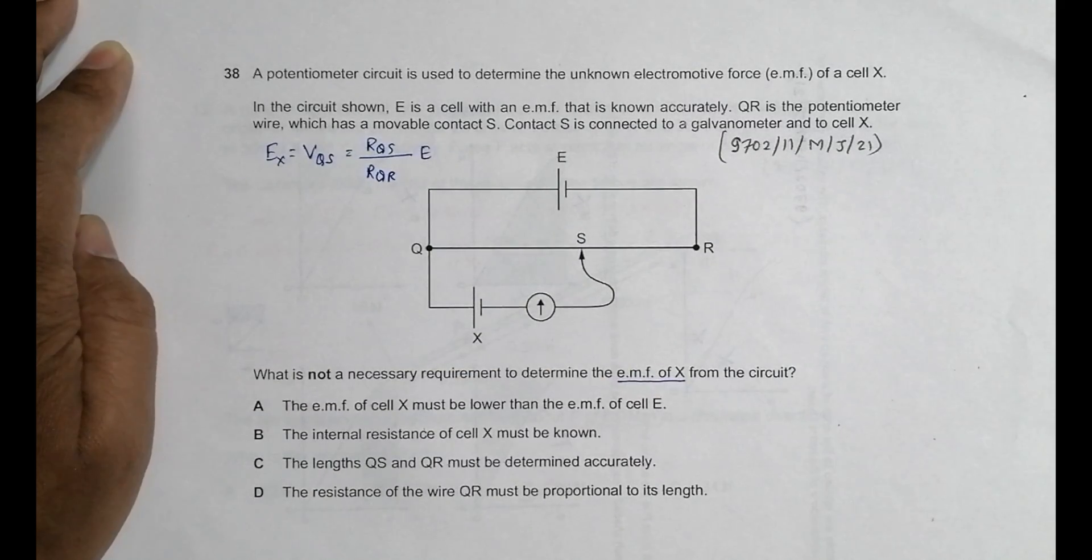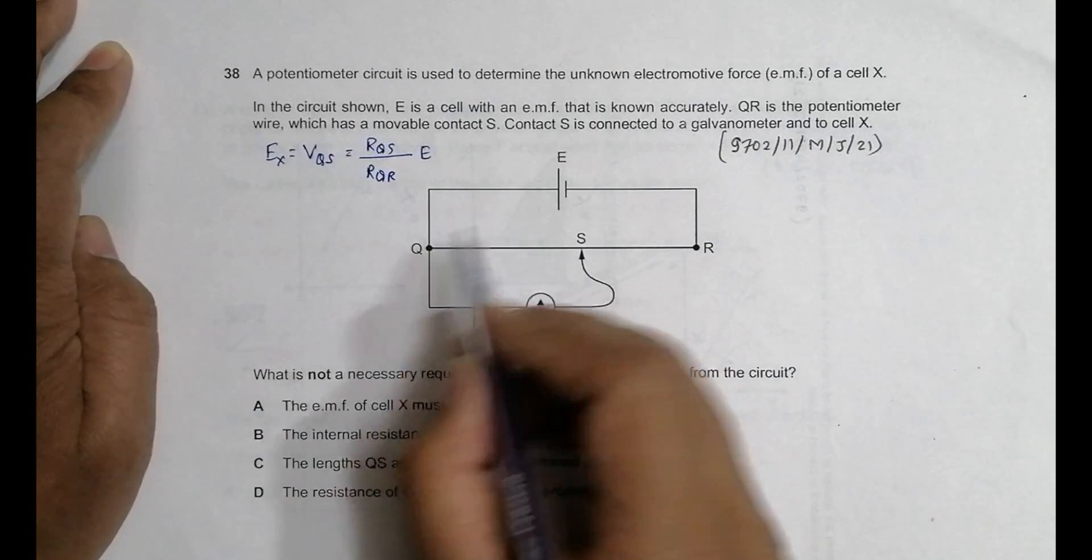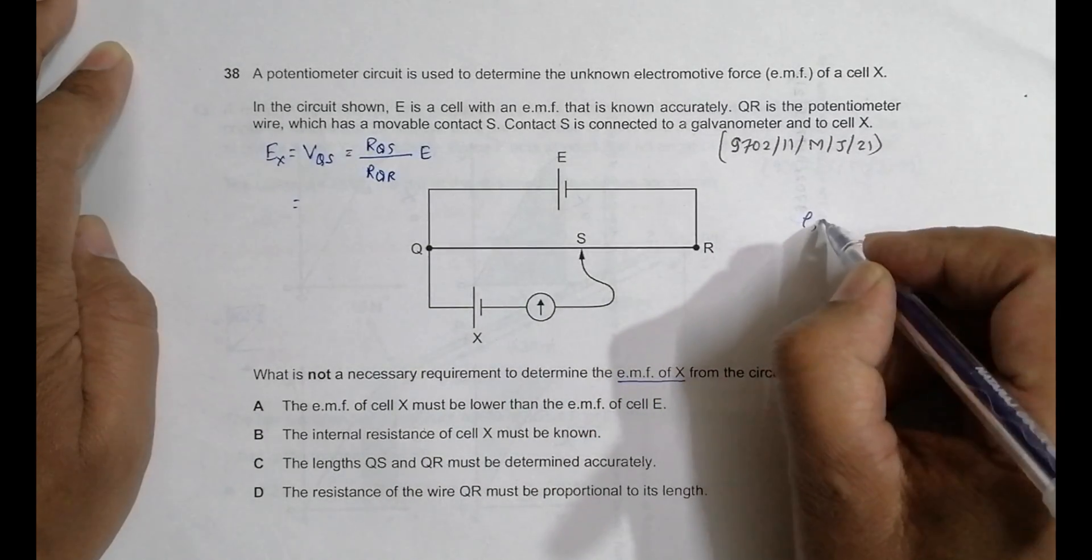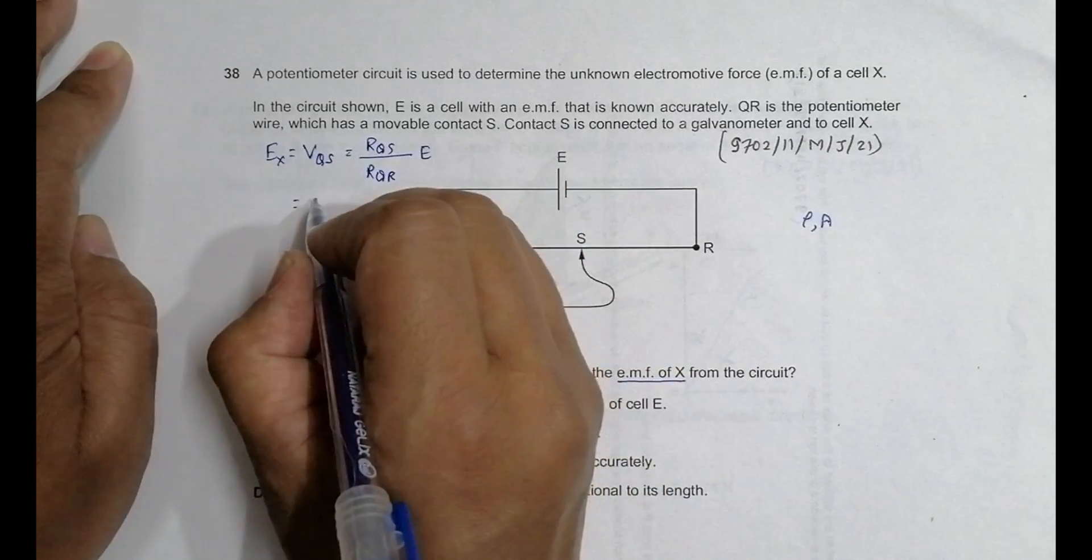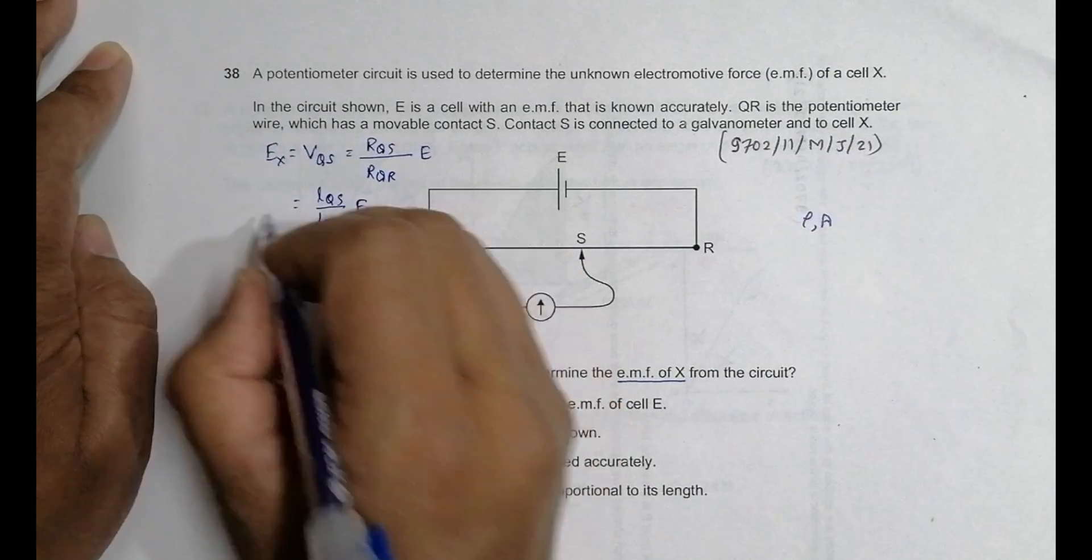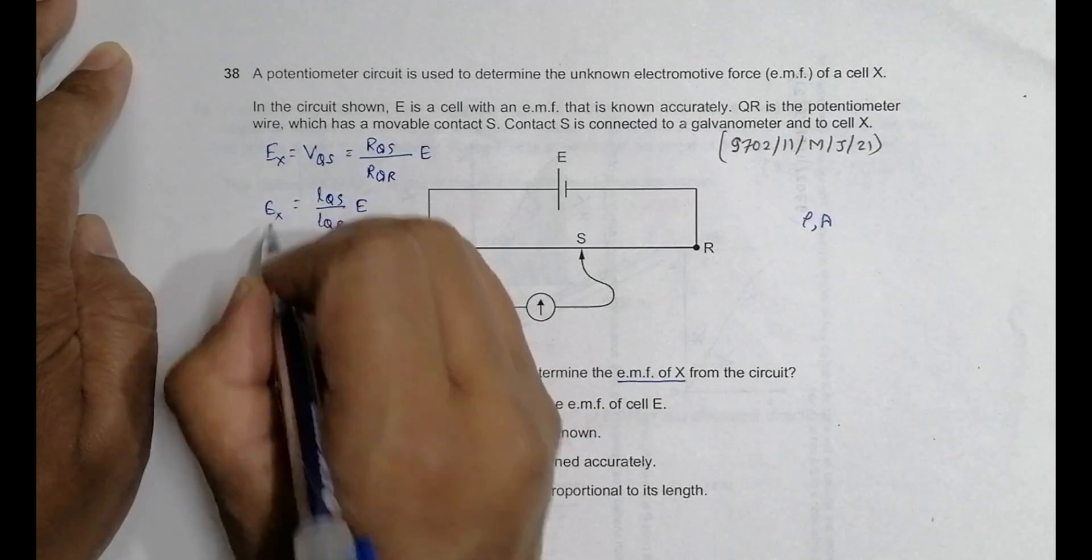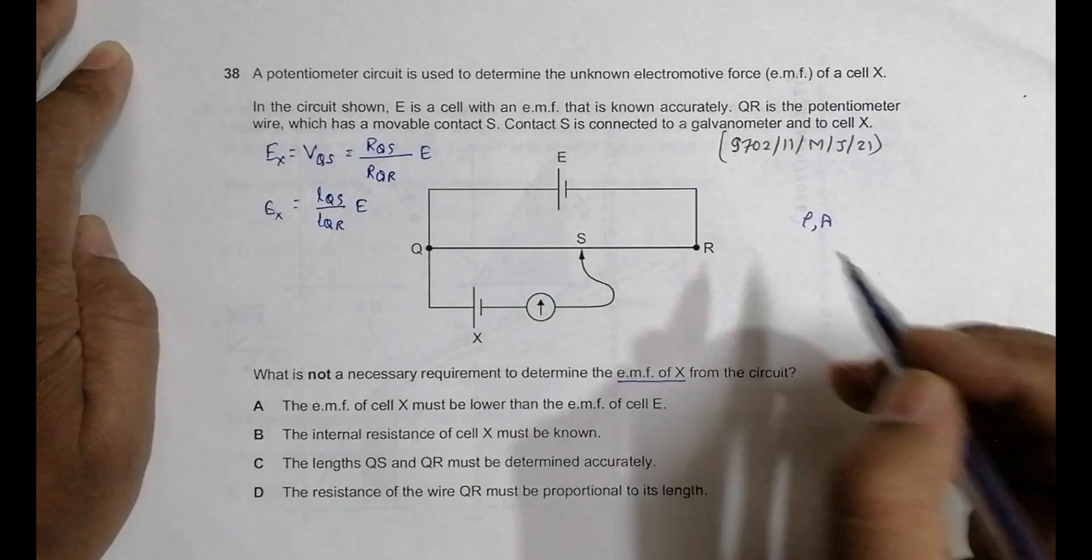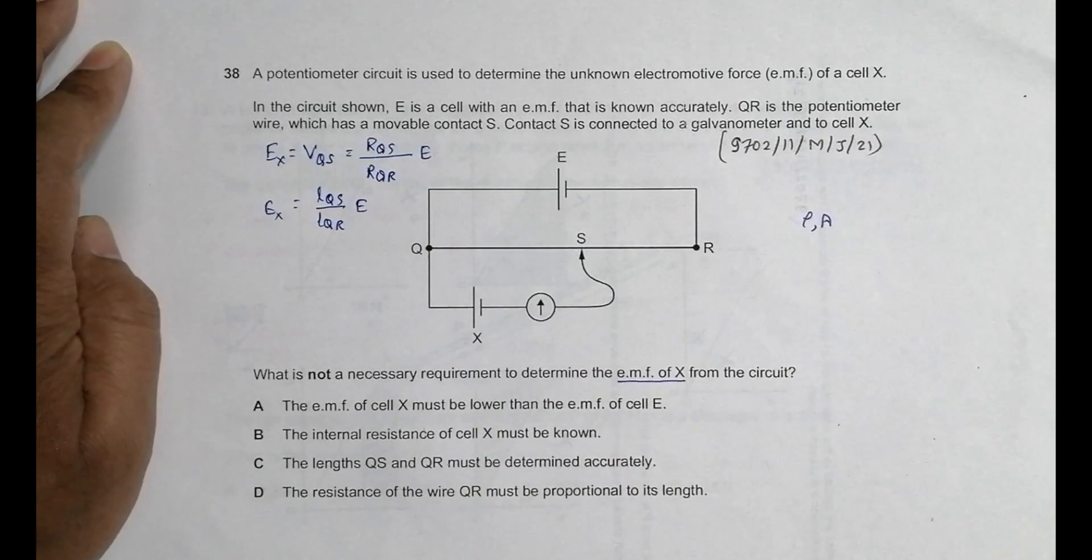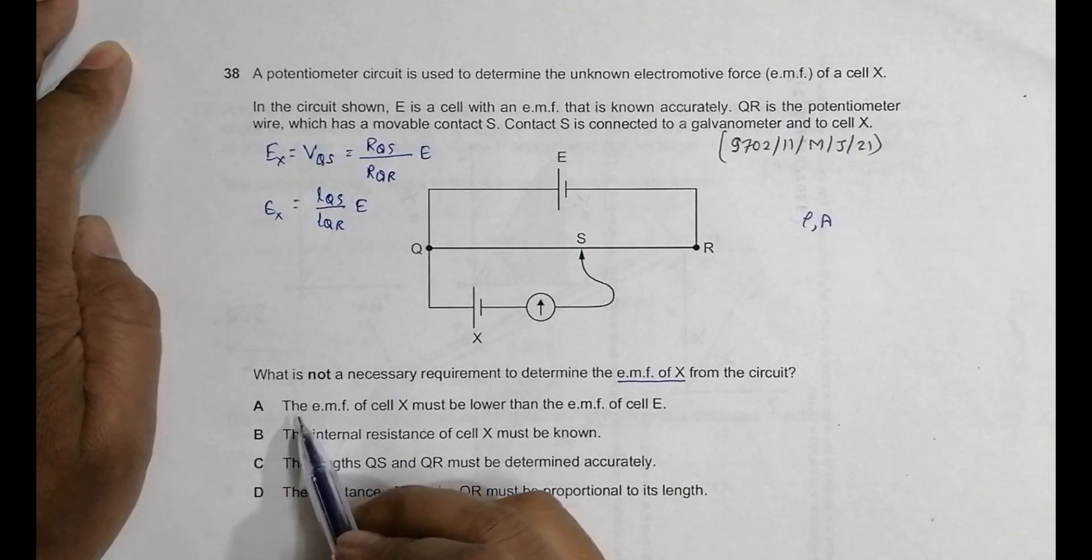So VQS is equal to this much, and this will depend upon, since we have got ρ is same and cross area is same, it should be equal to LQS by LQR into this E. So EX will be equal to somewhat like this when it is in balanced condition. So now let us analyze them one by one.